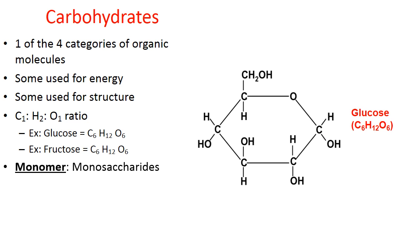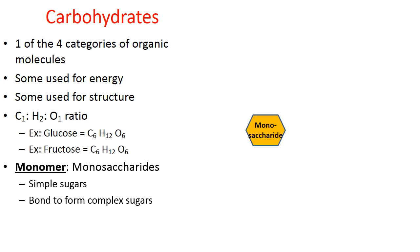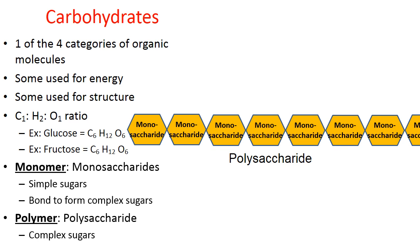Monosaccharides are the monomers of carbohydrates — they're the building blocks. Glucose is a great example of a monosaccharide; it's a simple sugar. Glucose will often bond with other monosaccharides to form complex sugars. I want to mention that the word 'saccharide' is Greek for sugar, so sugars are carbohydrates. When one monosaccharide bonds with another monosaccharide, this is called a disaccharide — 'di' is a prefix meaning two. When multiple monosaccharides bond together, this is called a polysaccharide — these are the complex sugars. Examples include starch, glycogen, and cellulose.